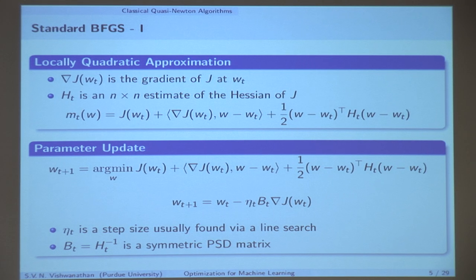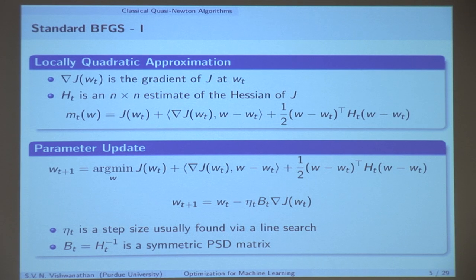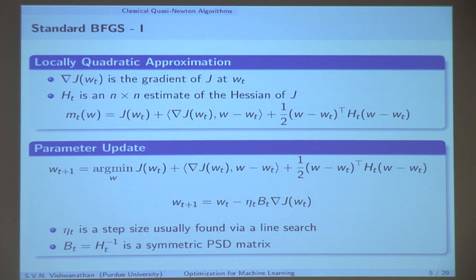The philosophy behind how Bt is derived is: you look at this model of your objective function and ask what you want your model to satisfy. I want my model to satisfy two conditions — that's sort of what they impose or came up with. The first condition is to say the gradient of the model must match the gradient of my objective function.